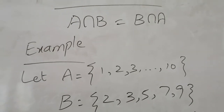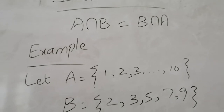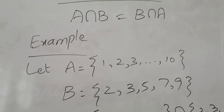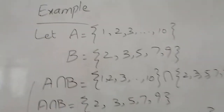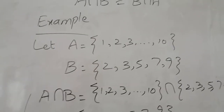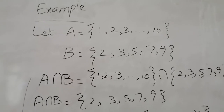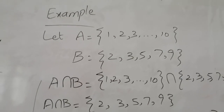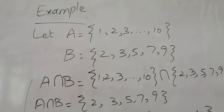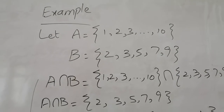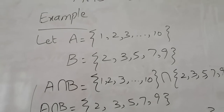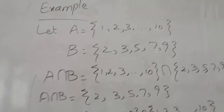Here is an example. A is the first ten natural numbers and B is the first five prime numbers. When we take A intersection B, the common elements are 2, 3, 5, 7, and 9 — the elements that are in both sets.